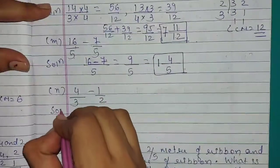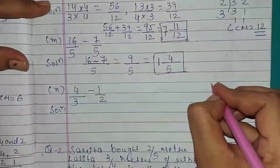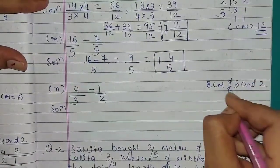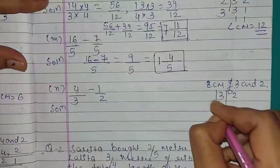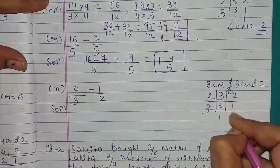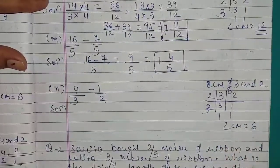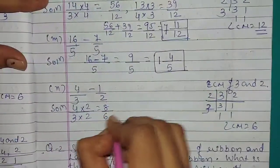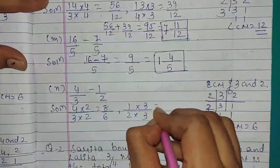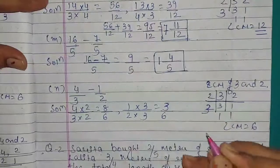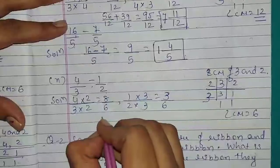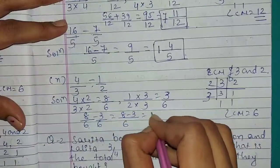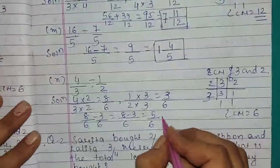Question number N: 4 upon 3 minus 1 upon 2. These are unlike fractions. LCM of 3 and 2 is 6. For 4 upon 3, multiply by 2 upon 2: 8 upon 6. For 1 upon 2, multiply by 3 upon 3: 3 upon 6. Subtracting: 8 upon 6 minus 3 upon 6 equals 5 upon 6. Answer is 5 upon 6. This is proper fraction.